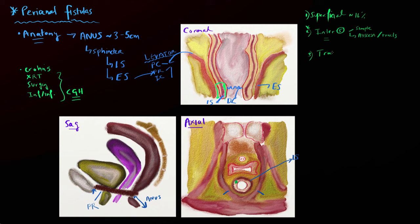The next type is a little more complex — the trans-sphincteric fistula, which also tends to be somewhat common. In these fistulas, the anal gland gets blocked and, like the inter-sphincteric fistula, it goes through the internal sphincter. But instead of decompressing through the inter-sphincteric fat, these go through the external sphincter itself and down into the ischio-anal fossa. They can also be associated with abscesses or multiple tracts, so it's very important to recognize and describe those.